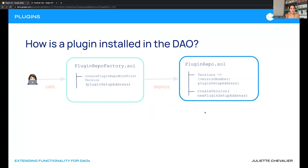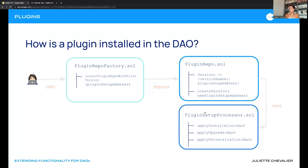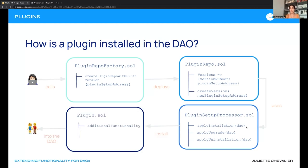Once published into the protocol, the plugin is visible in the subgraph and can be interacted with. To install that extended functionality into a DAO, we use the plugin setup processor. It will apply installation, apply uninstallation, or apply an upgrade. The apply installation takes in prepared setup data, grabs the prepared installation compiled from the plugin setup, and installs it into the DAO.